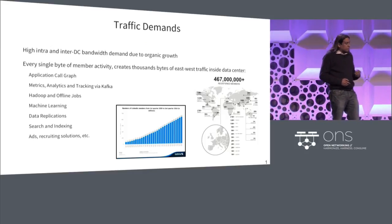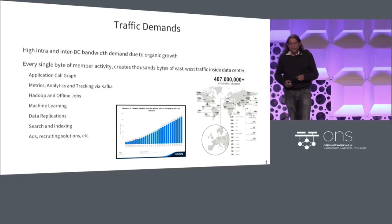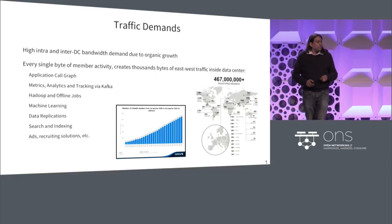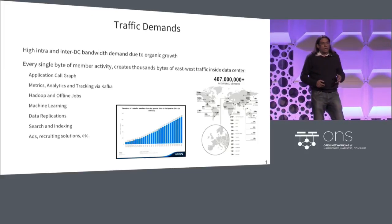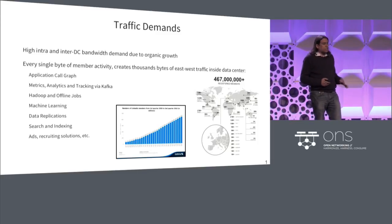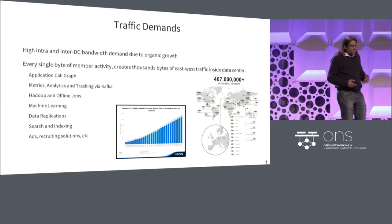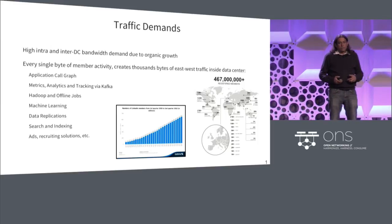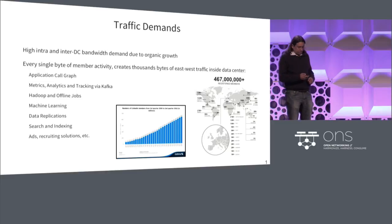We move tons of metrics inside the data center — it's in the billions per second. We have offline jobs processing, machine learning algorithms seeking across networks trying to get a bunch of data, lots of replication. All these things add to the amount of traffic, and all of this machinery is impacting our close to half a billion users out there.